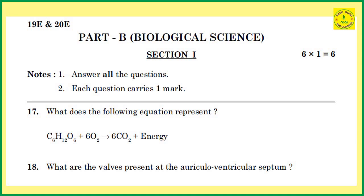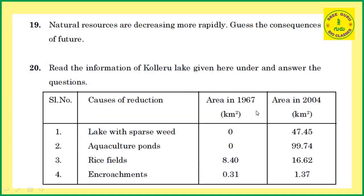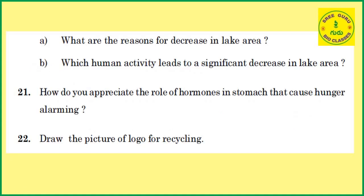Next, Part B — Biological Science. In Section 1, there are 6 questions and all must be answered. Each question carries one mark, so 6 into 1 equals 6 marks. Answers should be written in one word or one sentence.